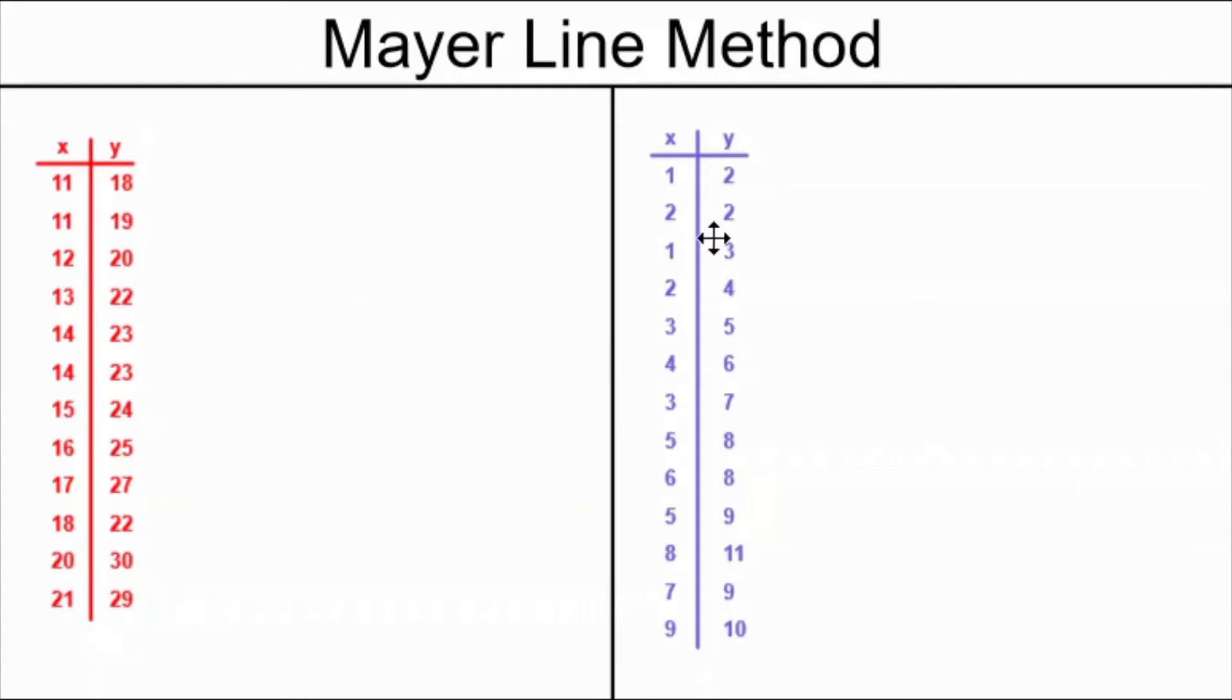In the blue example, the x values are not in increasing order. This is where the student would be unlucky because if you keep the points in this order in the table of values and try to do the Mayer-Line method, you will get incorrect averages for your x and y values and you will have an incorrect equation.